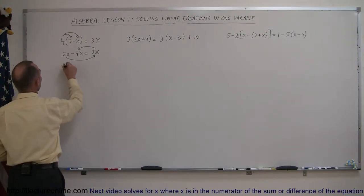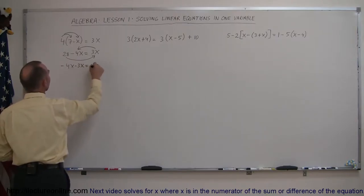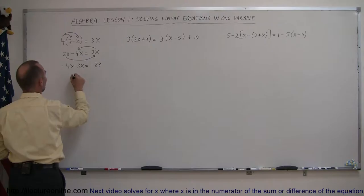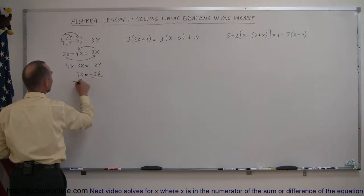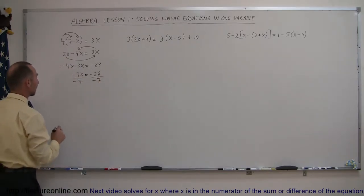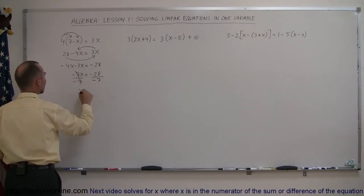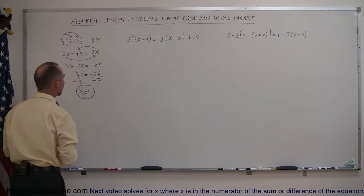So this becomes minus 4x minus 3x equals minus 28. Now we combine like terms: minus 4x minus 3x is minus 7x, equals minus 28. Now we divide both sides by the numerical coefficient — the number in front of the x. The minus 7 cancels out, so we have x equals minus 28 divided by minus 7, which is plus 4.